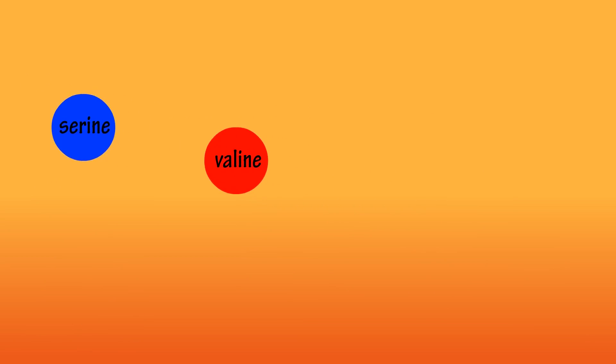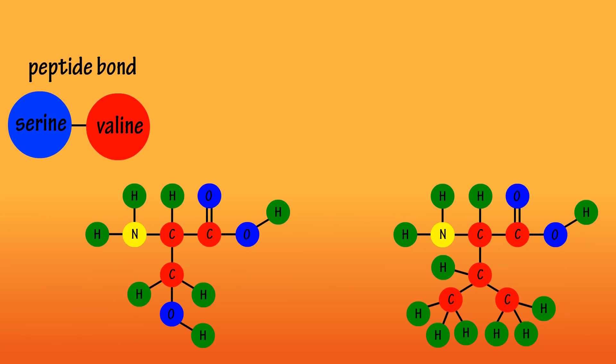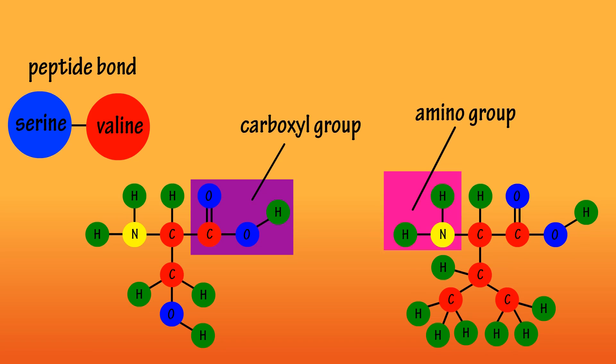An example of this is when two amino acids join together to form what is called the peptide bond. A peptide bond is when the carboxyl or COOH group of one amino acid bonds with the amino NH2 group of another amino acid.